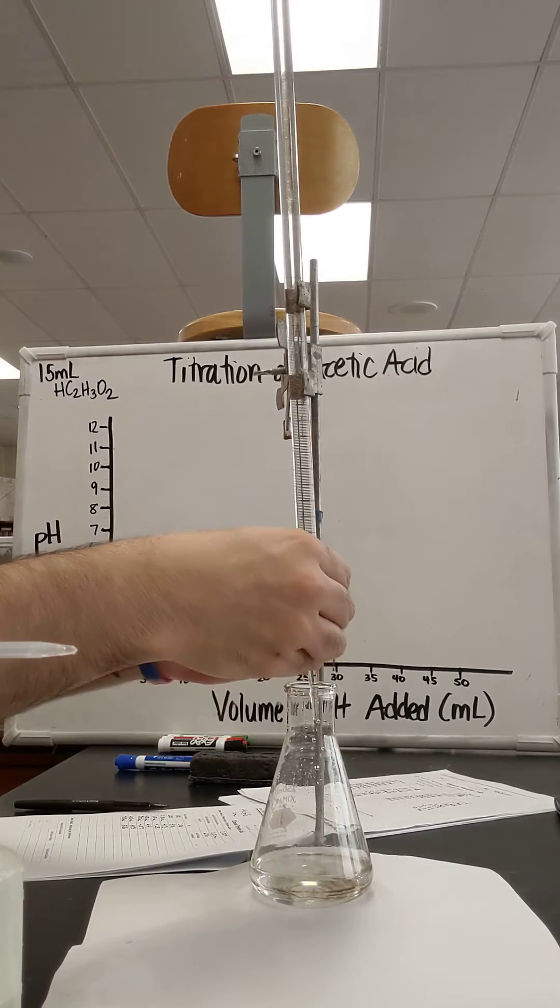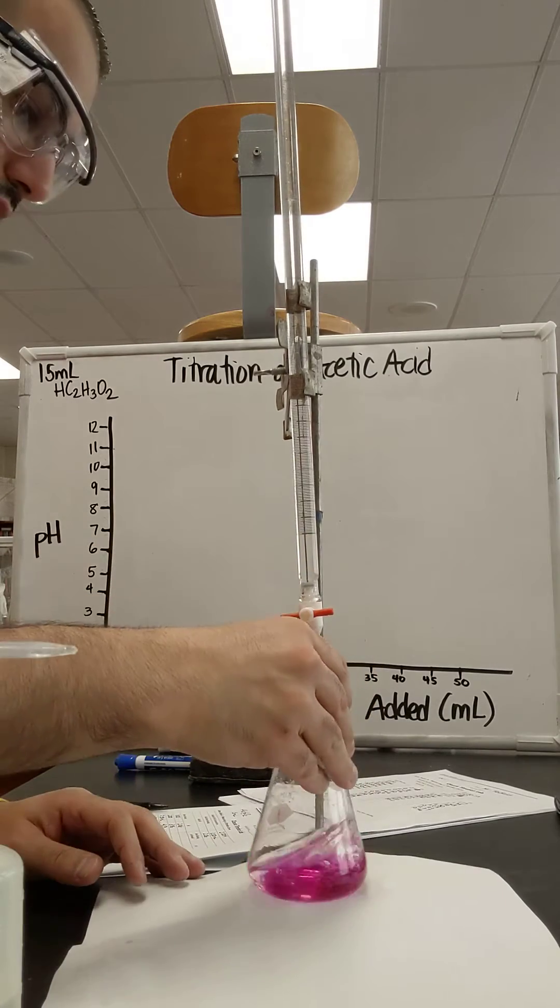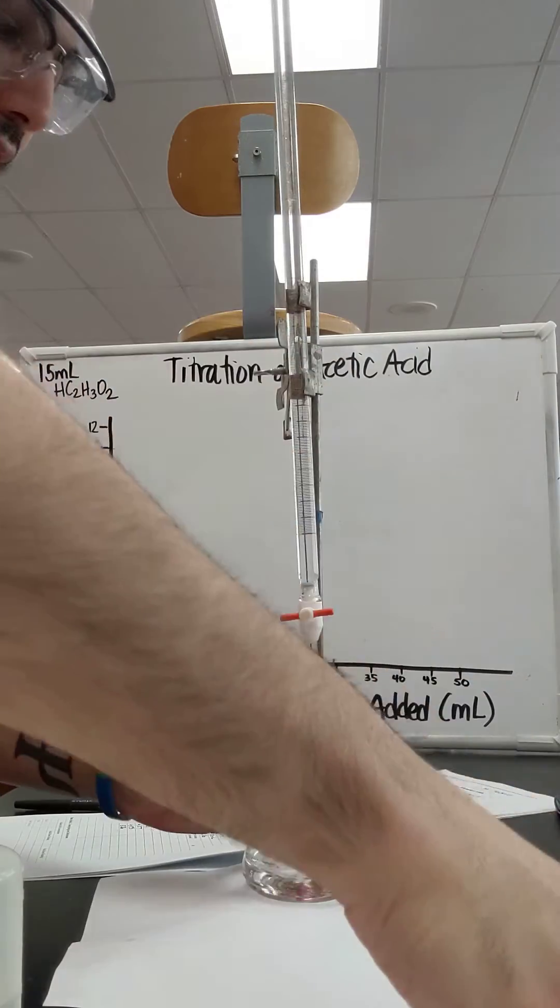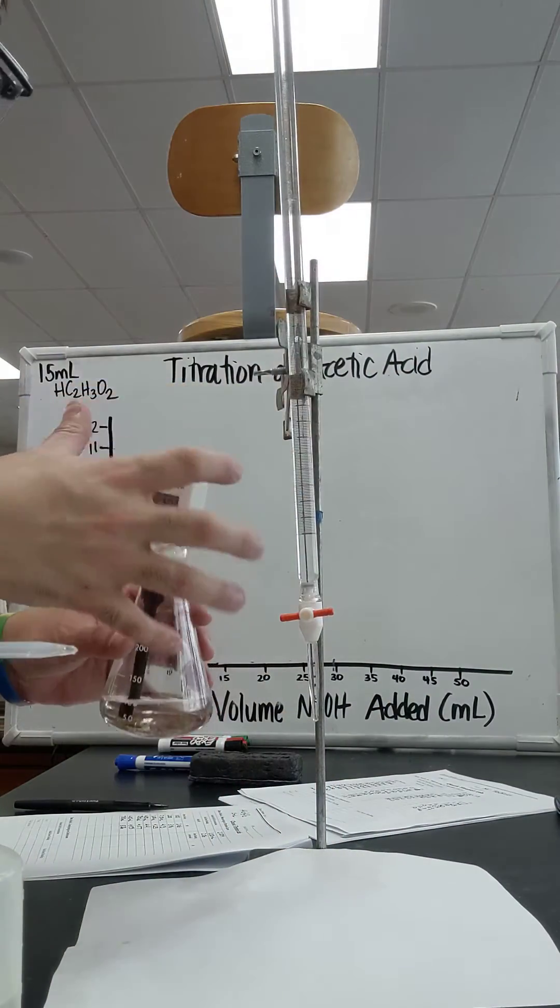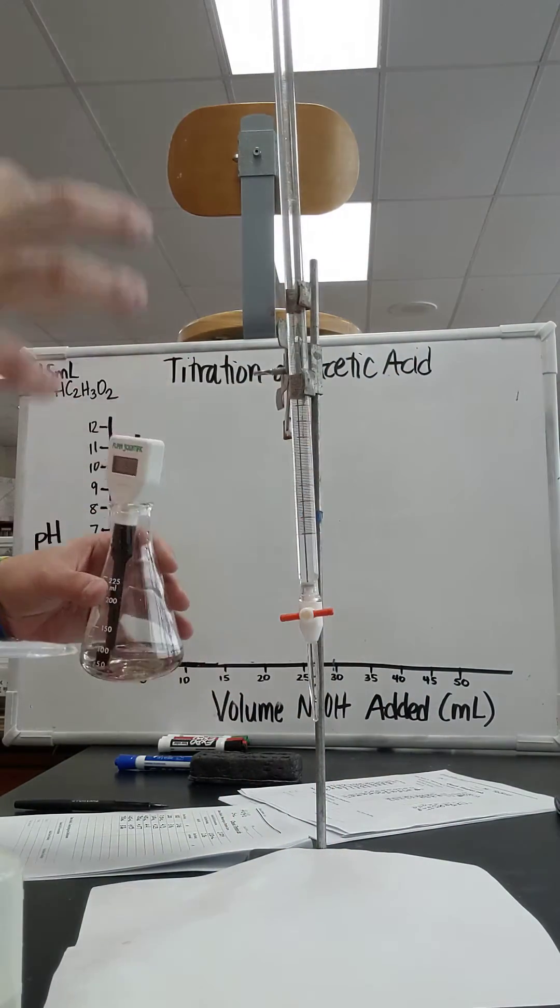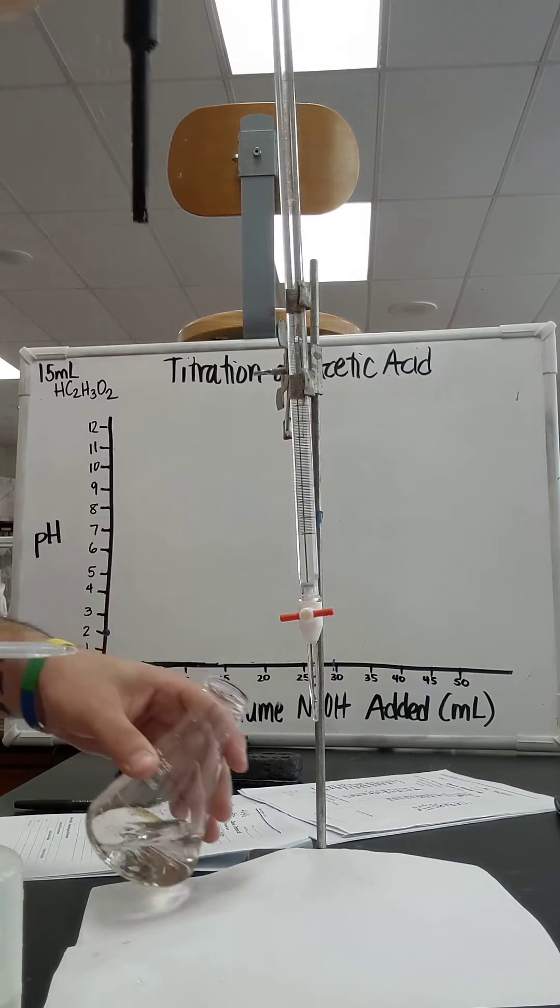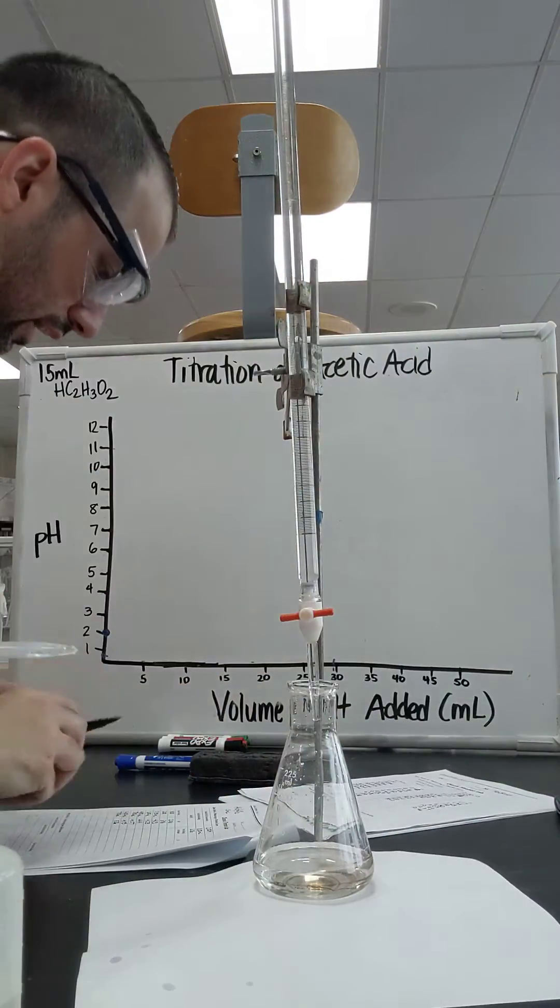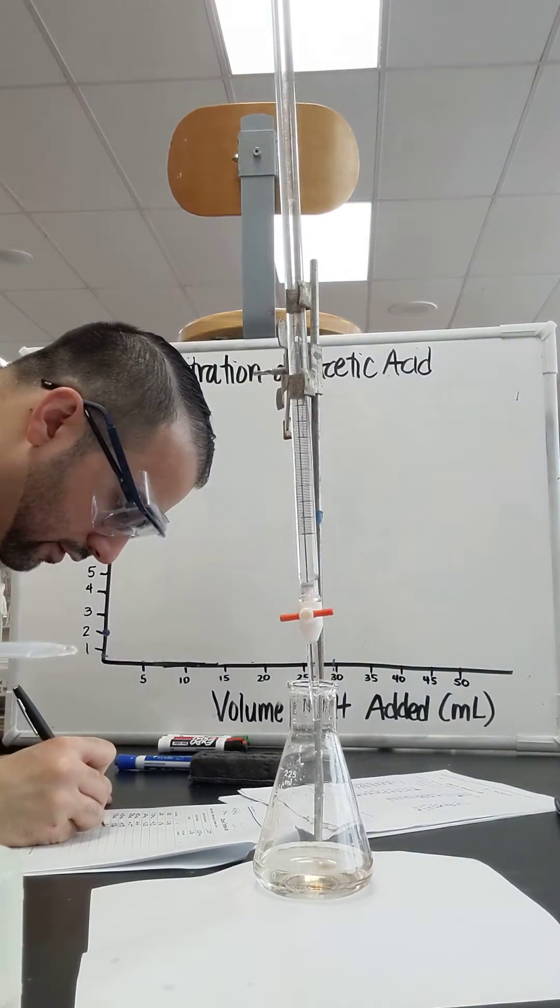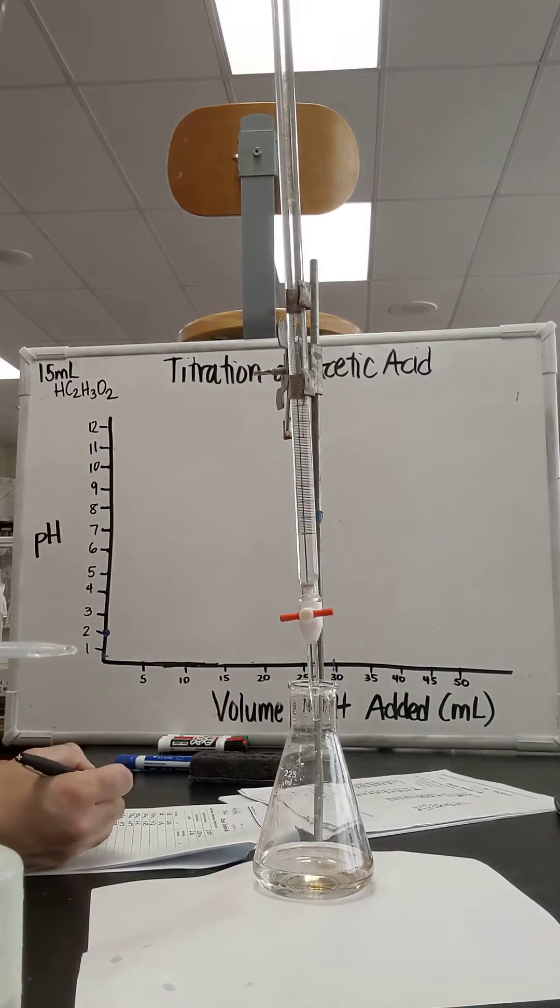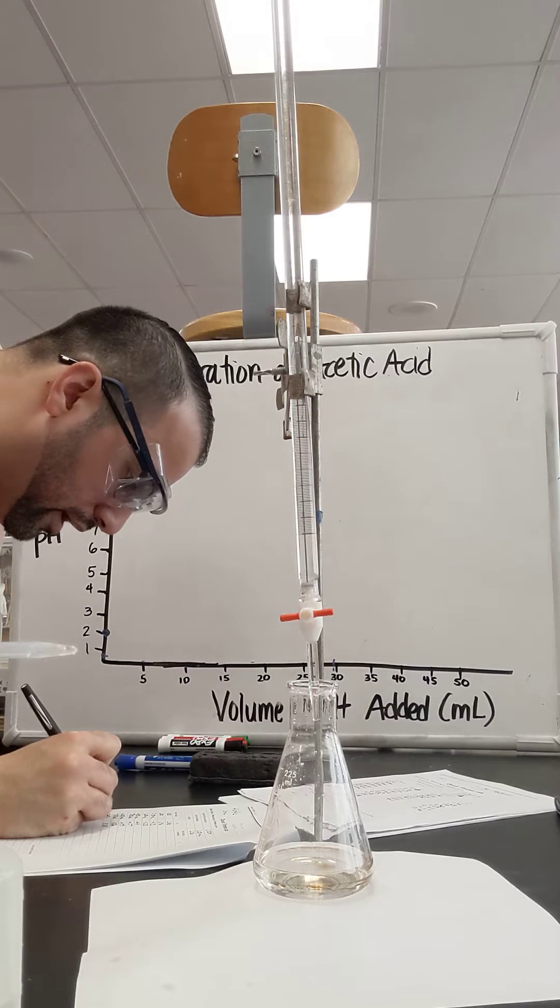Let me do another 0.5, actually. I got 7.5, it was getting darker. Once you notice that big pink color coming around, that means you're getting very close to your end point. I got 5.28 is my pH. I got a steady increase. And I got 7.5 milliliters approximately.